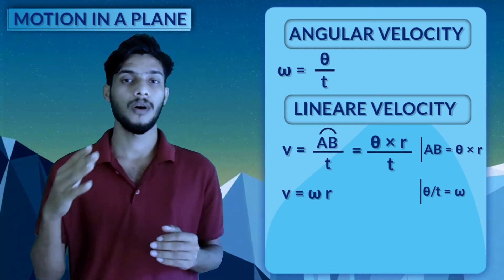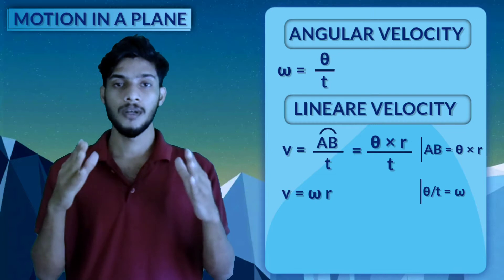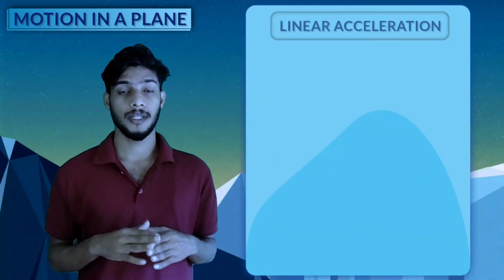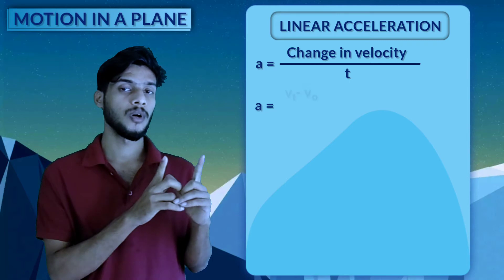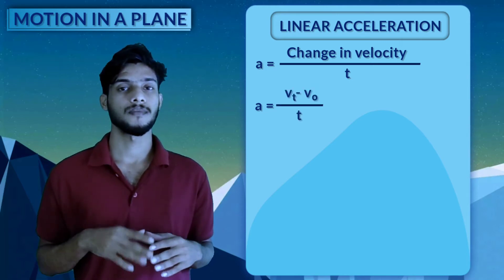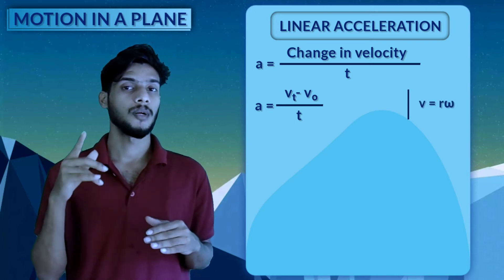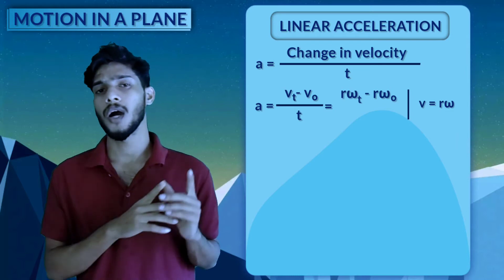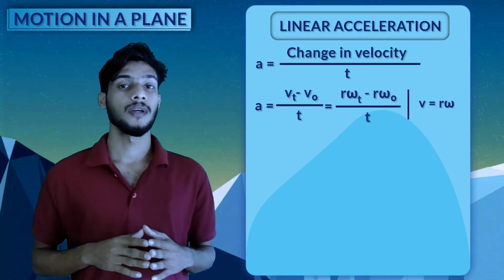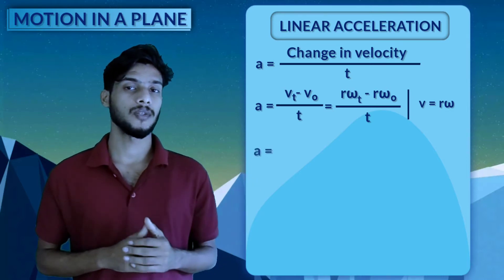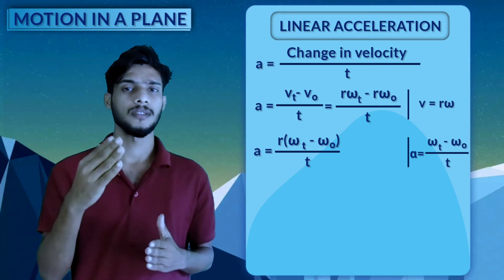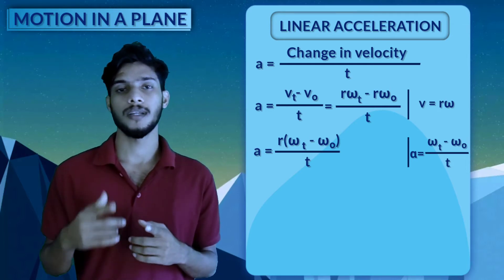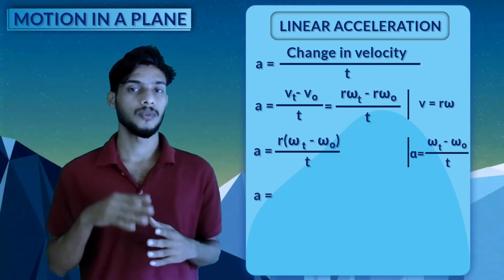So V equals r times omega. Now for the relation between angular and linear acceleration: linear acceleration a equals change in velocity divided by t. This gives r times omega-t minus r times omega-zero divided by t, which equals r times the change in angular velocity divided by t. Since that ratio is alpha, therefore a equals r times alpha.